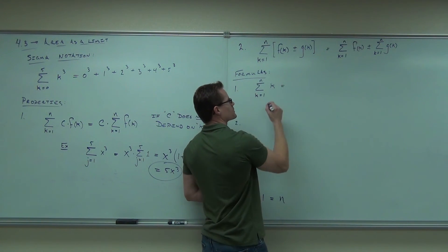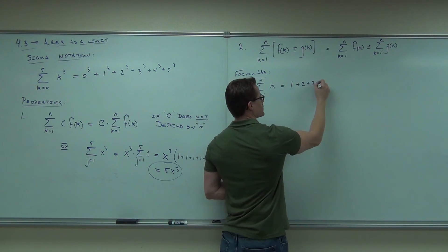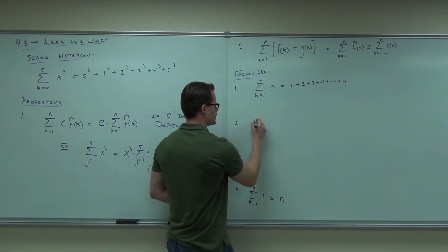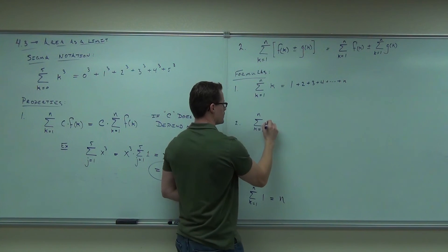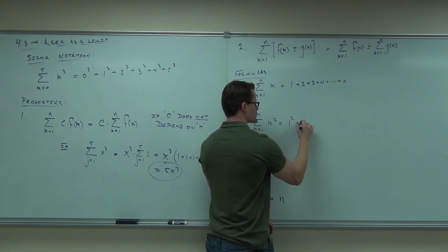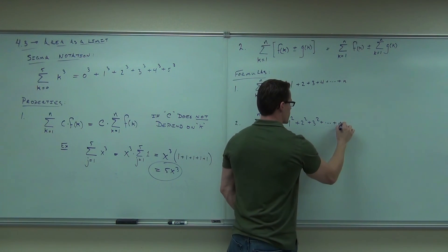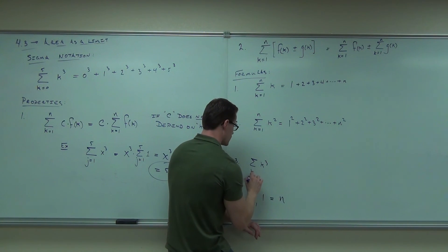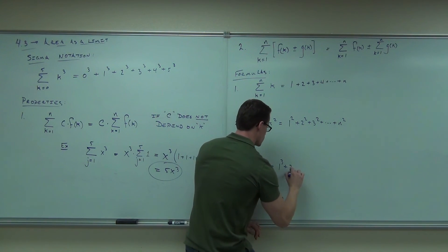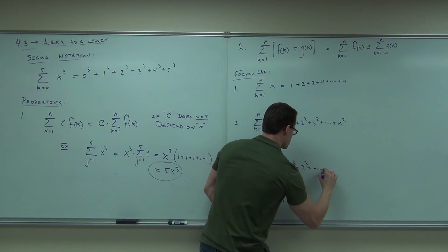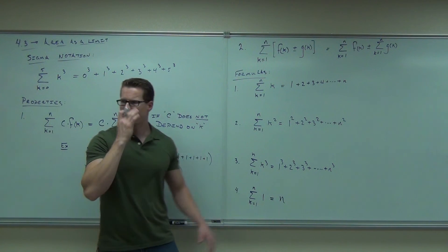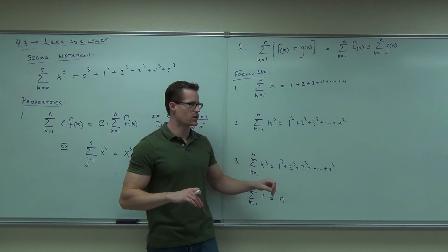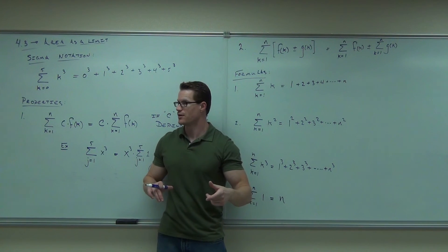What the sigma from 1 to n of k stands for is 1 plus 2 plus 3 plus 4 plus all the way to n. The sigma from 1 to n of k squared stands for 1 squared plus 2 squared plus 3 squared, all the way to n squared. And the sigma from 1 to n of k cubed stands for 1 cubed plus 2 cubed plus 3 cubed, all the way to n cubed. This is called open form notation — where you're explicitly adding everything together.